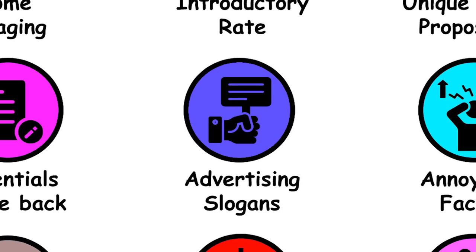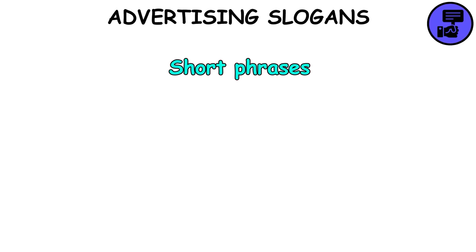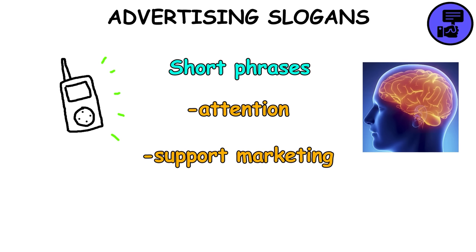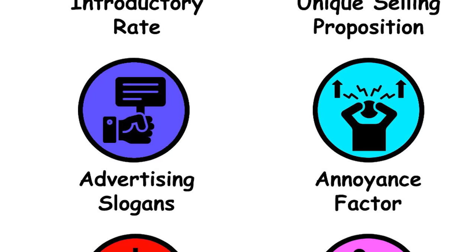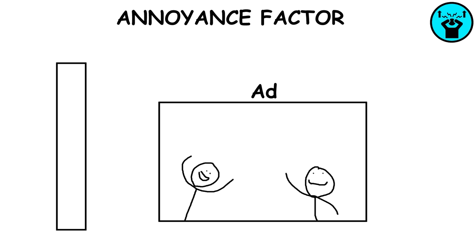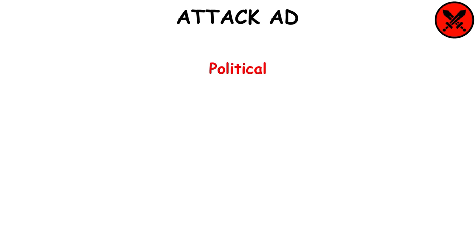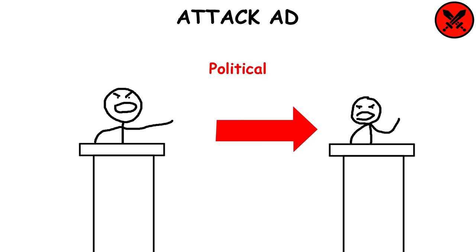Advertising Slogans: Short phrases in ads to create attention and support a company's marketing. They highlight product features or strengthen the brand thanks to the fact that they're easy to remember. Annoyance Factor: Measures ad irritation to evaluate effectiveness — intentionally annoying ads may stick in consumers' minds. Attack Ad: Political ads that target opponents, seeking to discredit them through mass media to gain voter support.